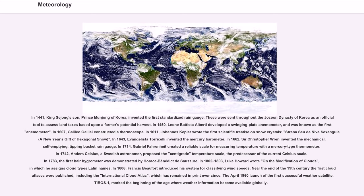In 1643, Evangelista Torricelli invented the mercury barometer. In 1662, Sir Christopher Wren invented the mechanical, self-emptying, tipping-bucket rain gauge. In 1714, Gabriel Fahrenheit created a reliable scale for measuring temperature with a mercury-type thermometer. In 1742, Anders Celsius, a Swedish astronomer, proposed the centigrade temperature scale, the predecessor of the current Celsius scale.